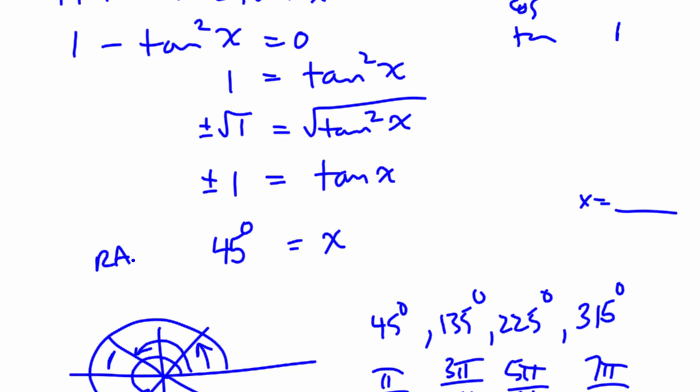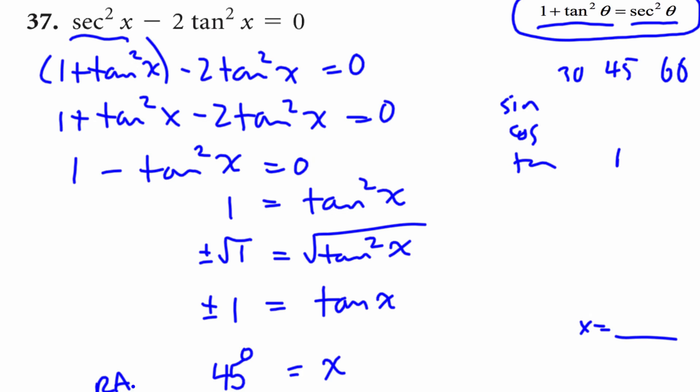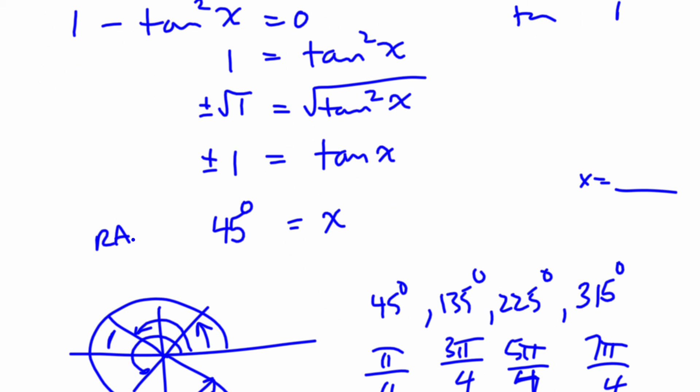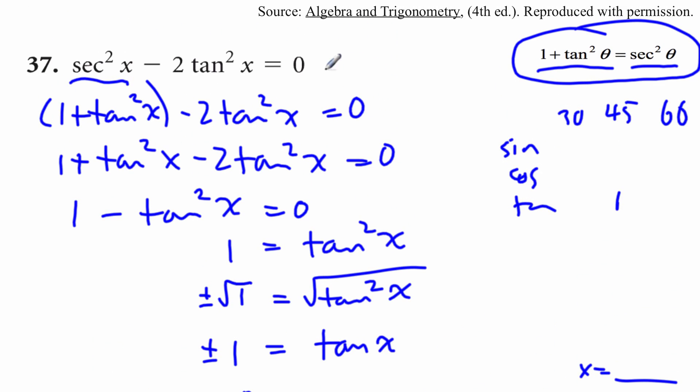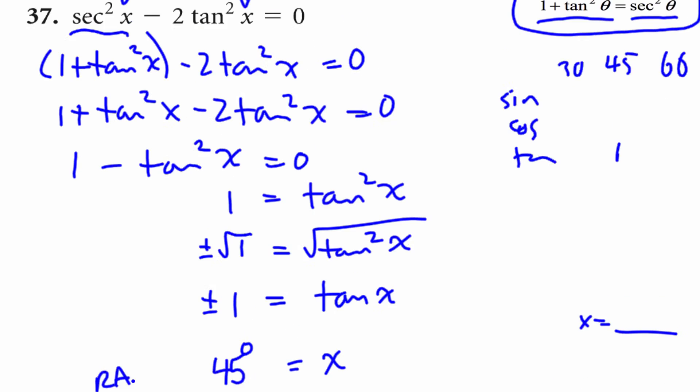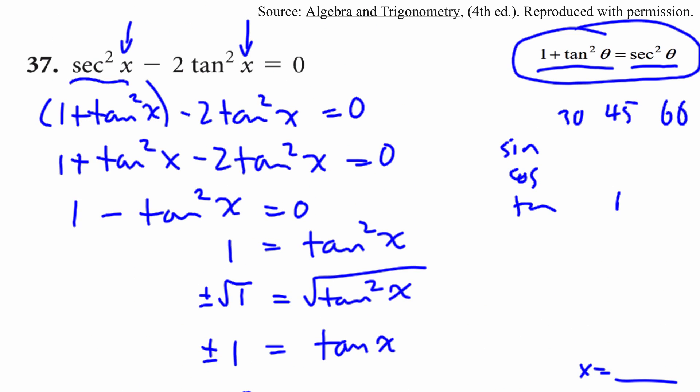Now, it might be a good idea to go back, and you can test this if you want. Maybe just test it with one. You can take a 45 and plug it in there, and plug it in there. And when you do, you should come up with zero as your answer. If you don't, then that means the 45 is incorrect. But it should come out. Okay, hopefully that helps answer that question.